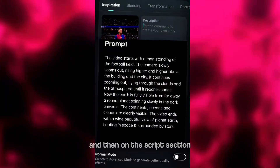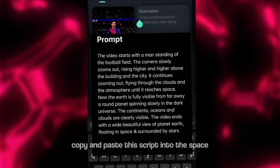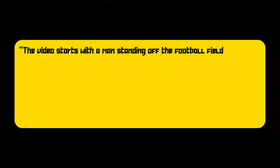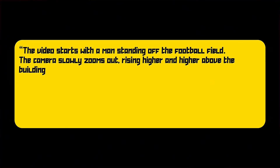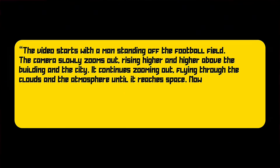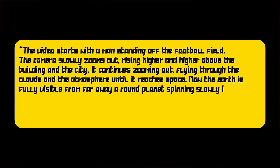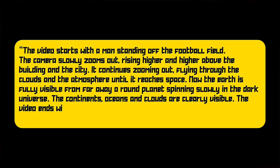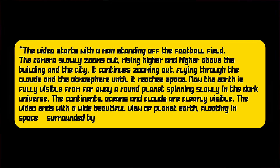Then on the script section, copy and paste this script into the space. The script says: the video starts with a man standing on the football field. The camera slowly zooms out, rising higher and higher above the building and the city. It continues zooming out, flying through the clouds and the atmosphere until it reaches space. Now the Earth is fully visible from far away, a round planet spinning slowly in the dark universe. The continents, oceans, and clouds are clearly visible. The video ends with a wide, beautiful view of planet Earth floating in space and surrounded by stars.